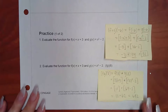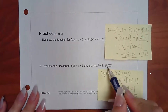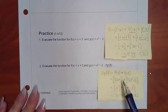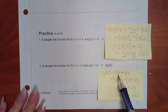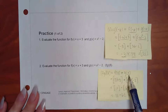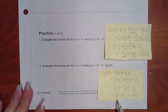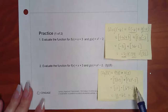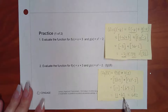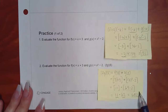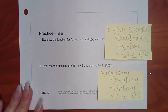For problem 2, when the functions are back to back like that, it means to multiply. So you take f(8) times g(8). Plugging 8 into f gave 11, and plugging 8 into g eventually gave 62. Multiplying those together gave the final answer.